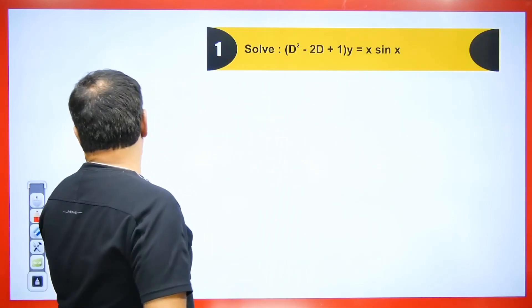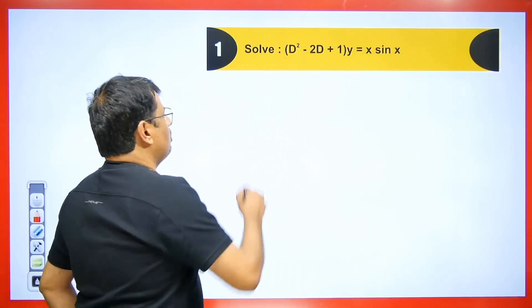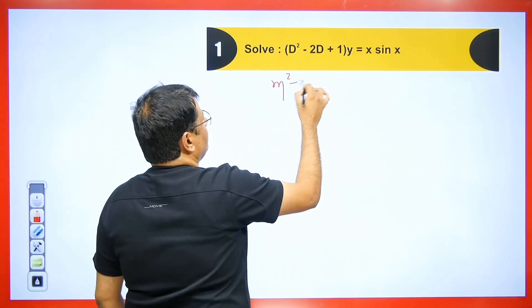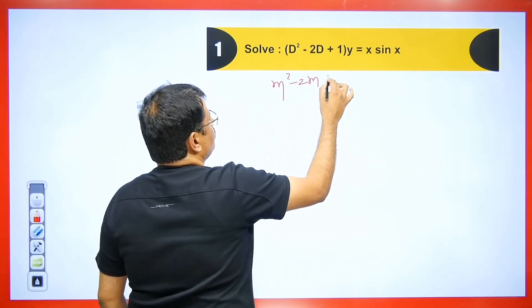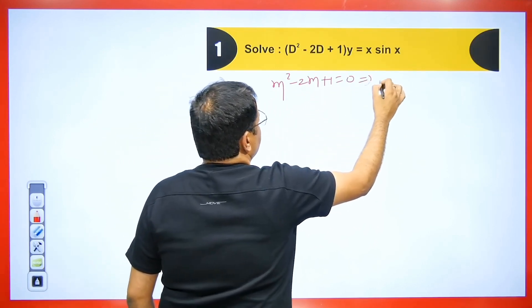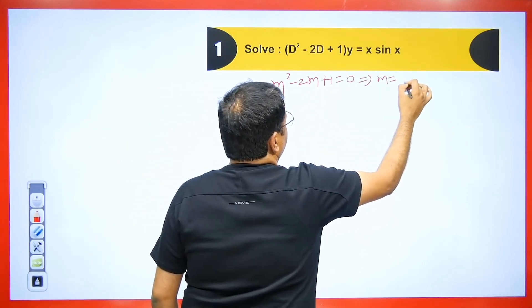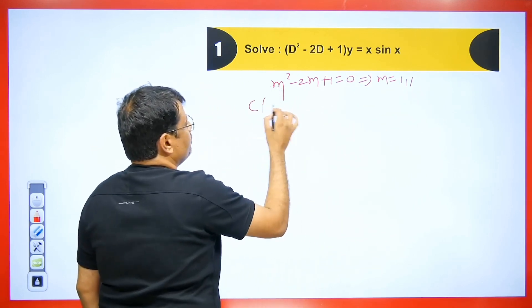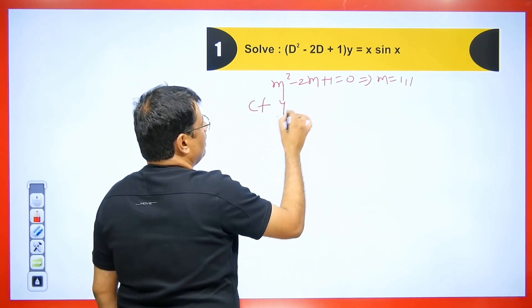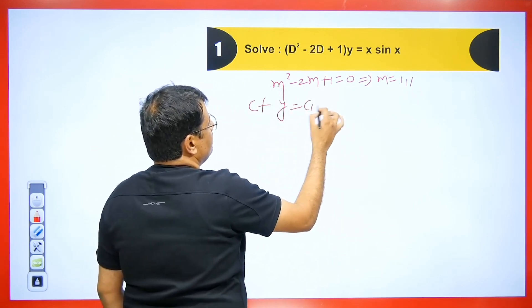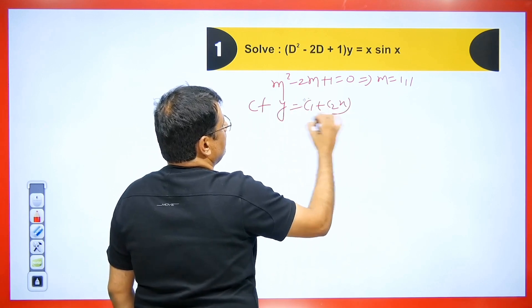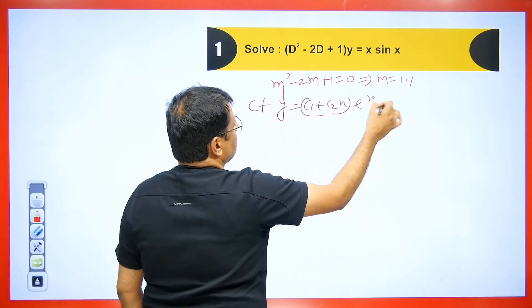Let's say we have a question. We will find the CF. So m²−2m+1 = 0. We know that the value of m will be 1, 1. So the CF we will get is (c₁ + c₂x)·eˣ.